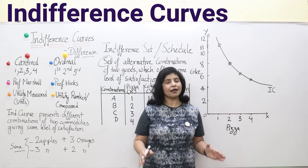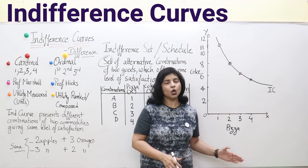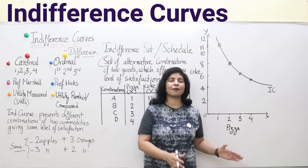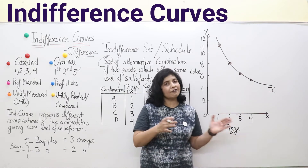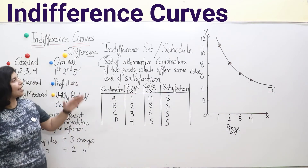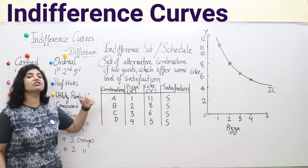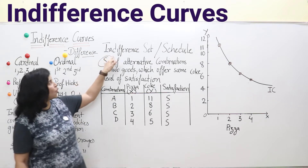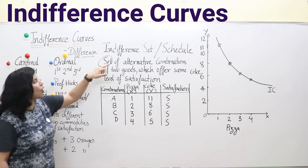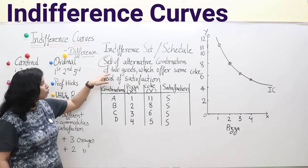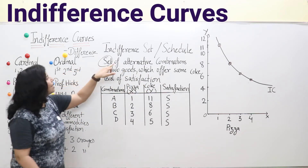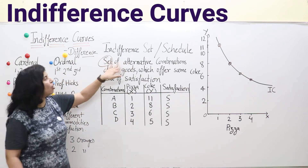Indifference curve is derived from the word 'indifference' — if we are not making a difference towards two combinations, we are indifferent. An indifference curve gives different combinations of commodities towards which the consumer is indifferent. This can be explained with the help of an indifference schedule, also called an indifference set — a set of alternative combinations of two goods which offer the same level of satisfaction.